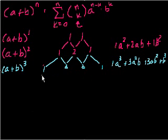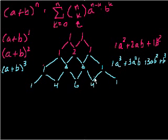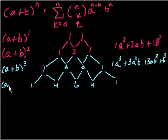So let's do the next one. We can bring down a 1. 1 plus 3 is 4, 3 plus 3 is 6. And this is neat — you can actually generate binomial coefficients without having to compute them. It's a very simple algorithm for generating them. And it's symmetric, just as you would expect, because you could easily switch b and a — a plus b is the same thing as b plus a. So we very quickly figured out the binomial coefficients for a plus b to the fourth.